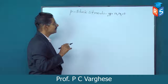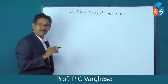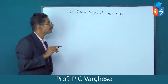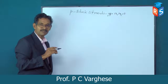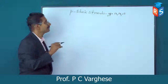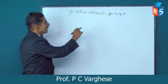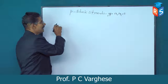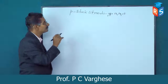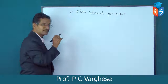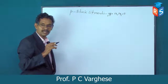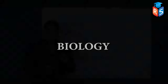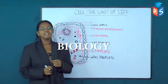Elements are classified into S block, P block, D block, and F block. The S block elements are in groups 1 and 2, meaning their valence shell electronic configuration ends in S1 or S2.